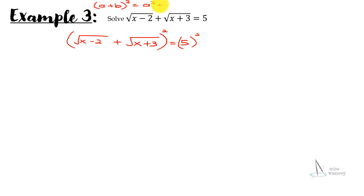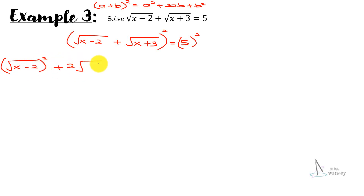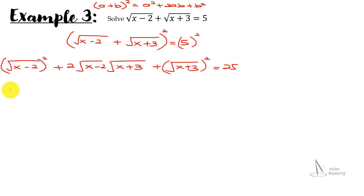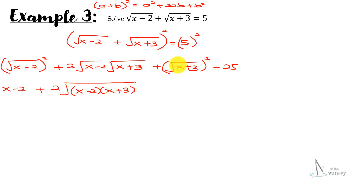Using the formula (a + b)² = a² + 2ab + b²: we expand to get (√(x−2))² plus 2·√(x−2)·√(x+3) plus (√(x+3))², equal to 25. The squares cancel the square roots, giving x minus 2 plus 2·√((x−2)(x+3)) plus x plus 3 equal to 25.